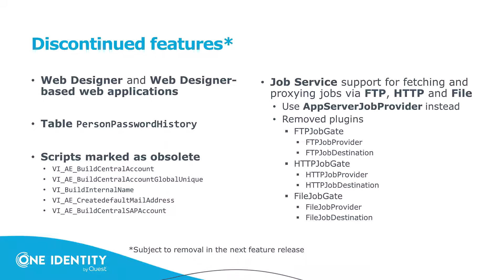From the job service perspective, there were features to transport job information from one job service to another: an FTP job gate sending files using the FTP protocol, an HTTP job gate server, and a file job gate server that created files directly in a file location. All of that can now be completely replaced by using the application server, making those slow file transfers unnecessary. The last customer using those features has also moved to the application server, so the number of plugins for job services gets simplified.